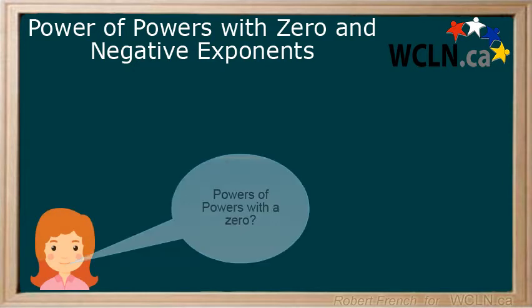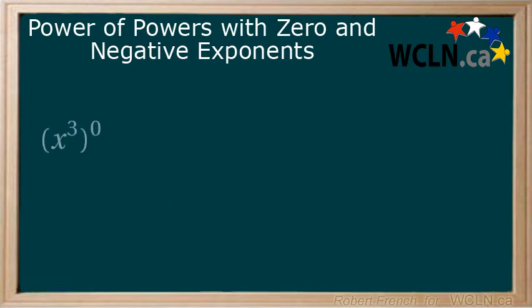Now let's take a look at powers of powers involving zero. It does not matter which exponent in the power of a power is the zero — the end result will be the same. Here are two examples: x to the power of 3 to the power of zero, and 101 to the power of zero to the power of 5.